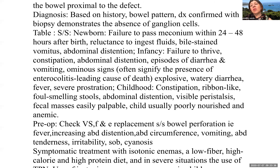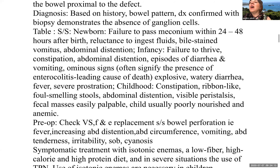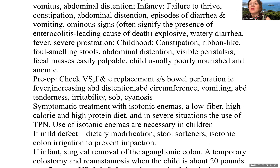Diagnosis is based on history and bowel pattern, confirmed with a biopsy showing lack of ganglion cells. For a newborn: failure to pass meconium within 24 to 48 hours after birth, reluctance to ingest fluids, bile-stained vomitus, and abdominal distension. In infancy: failure to thrive, constipation, abdominal distension, episodes of diarrhea and vomiting. An ominous sign of enterocolitis — a leading cause of death — would be explosive watery diarrhea, fever, and severe prostration.